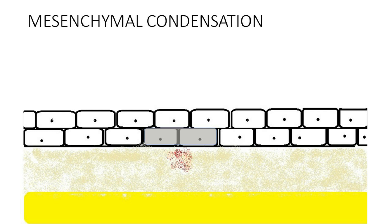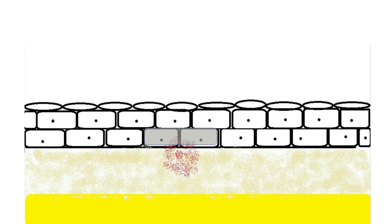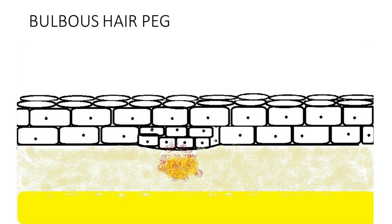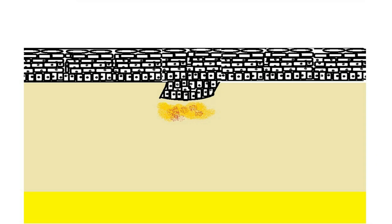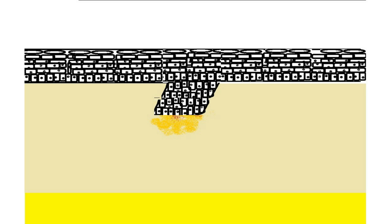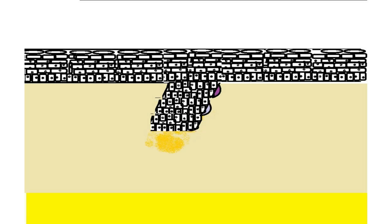Specialized mesenchymal cells organized in a small condensate directly below the basement membrane stimulate the overlying epithelial cells to invaginate and penetrate into the dermis, forming an epidermal peg. The mesenchymal condensation becomes denser and signaling increases. The hair germ proliferates to form a rod-like hair peg that pushes down into the dermis. The tip of the hair peg expands to form a bulbous structure called the hair bulb.